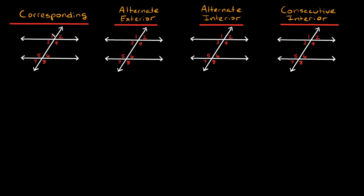So first of all, let's start with corresponding angles. Corresponding angles are just angles that are in similar positions. So here you can see that angle one is basically in the top left of this little cross up here, and five is also in the top left of this little cross right here. So angle one and five are corresponding angles. Same thing — four is in the bottom right, eight is in the bottom right, so four and eight are corresponding angles. Now if your two lines are parallel, then corresponding angles are congruent, meaning they have the same angle measure. So if angle one is 100 degrees, angle five is also 100 degrees. If angle two is 80 degrees, then angle six is also 80 degrees.